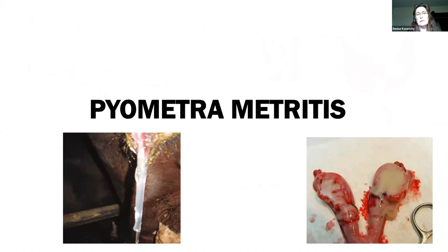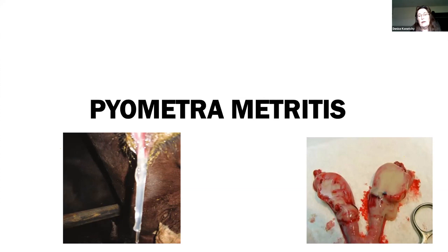Pyometra is basically a pus-filled uterus — not something I see too commonly in our small ruminants. The most common indication that this is going on is a pussy discharge being passed from the vulva area. We can utilize medicines to help get that uterus to involute and express the material, some flushing may be helpful, and some additional hormone therapy may help get these animals cleaned out and treated.